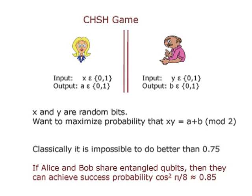On the other hand, if Alice and Bob share entangled qubits, then they can achieve a success probability of cosine squared π/8, which is about 0.85. This is essentially what's called the Bell inequality — classically you can't do better than 0.75, but more than just classically: under any local theory of a certain kind, you can't do better than 0.75. Quantumly, this is what quantum mechanics predicts and it's much larger.